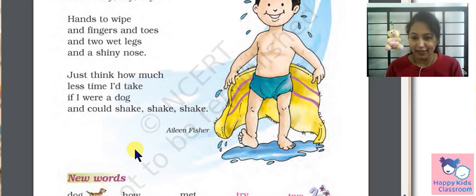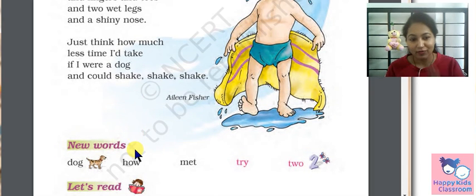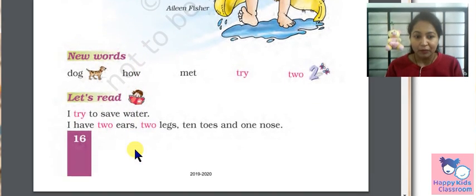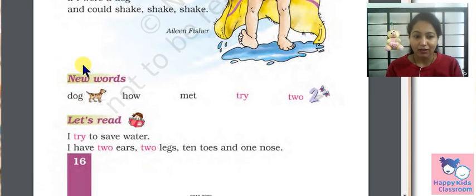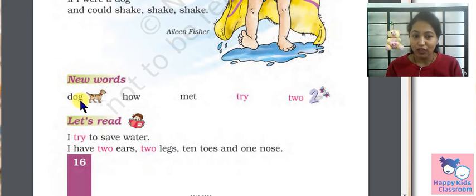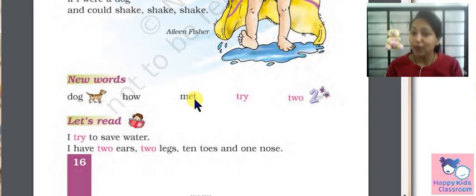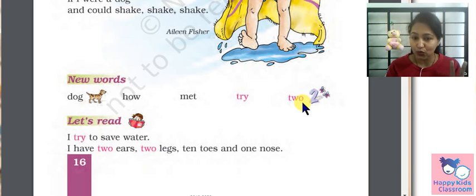So let us see the exercise. New words. D-O-G. Dog. H-O-W. How. M-E-T. Met. T-R-Y. Try. T-W-O. Two.